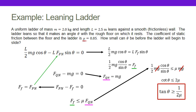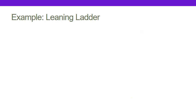This means that the angle I can set my ladder at only depends on friction and my friction coefficient. The tangent of my angle has to be greater than or equal to one over two times the coefficient of static friction. So my angle has to be greater than the arc tangent of one over two times the coefficient of static friction.